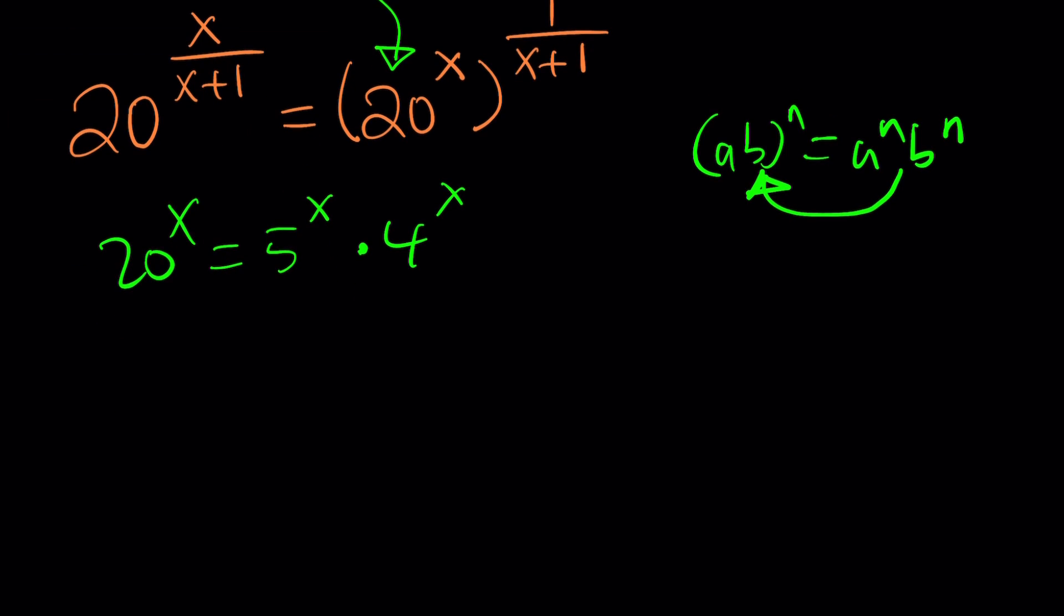Let's see how that works. But replace 20 to the power x with that. And I should probably not separate them first. But anyways, you get the idea. So it's going to look like this. 5 to the x to the power 1 over x plus 1. And then 4 to the power x to the power 1 over x plus 1. Great.